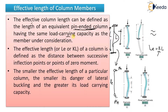Effective length, denoted by LE or KL, of a column is also defined as the distance between successive inflection points or points of zero moment. These are the distances between the two successive inflection points — that will be the effective length, for example when both ends are fixed.